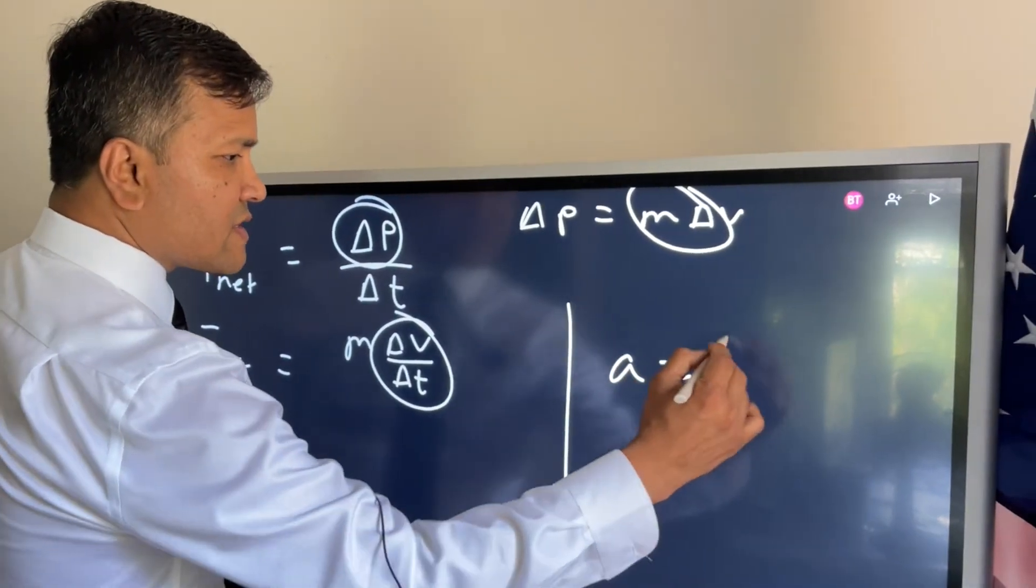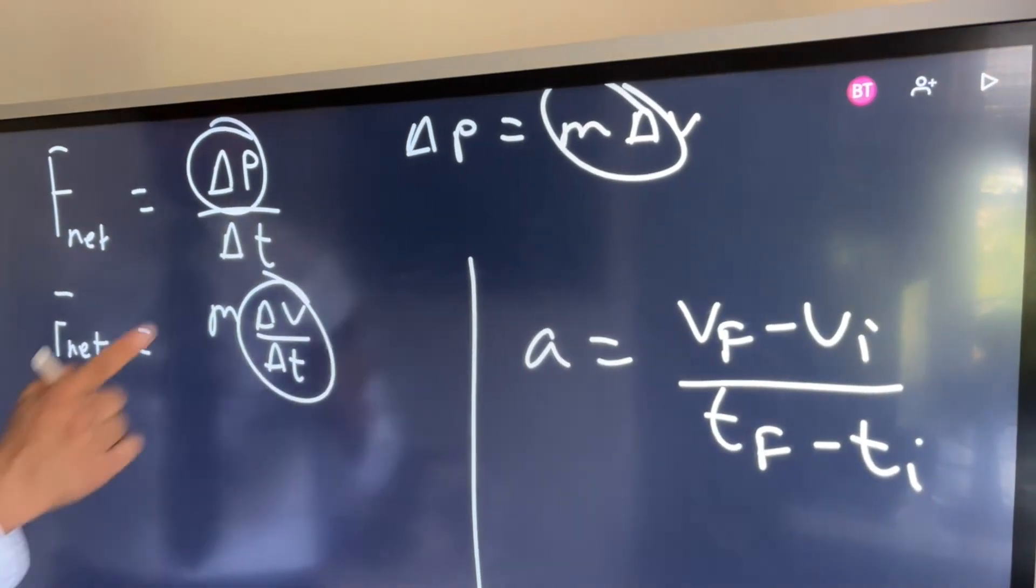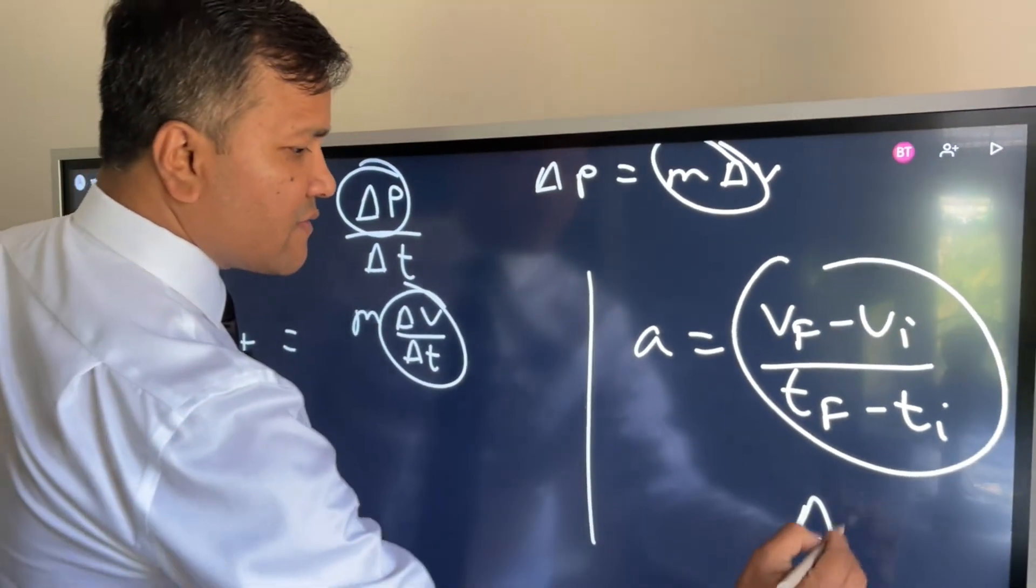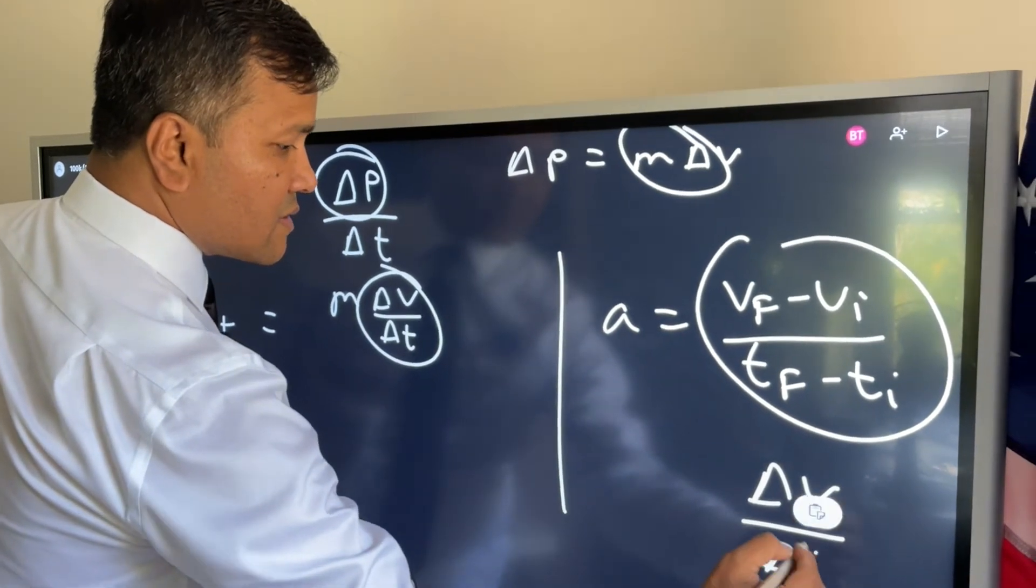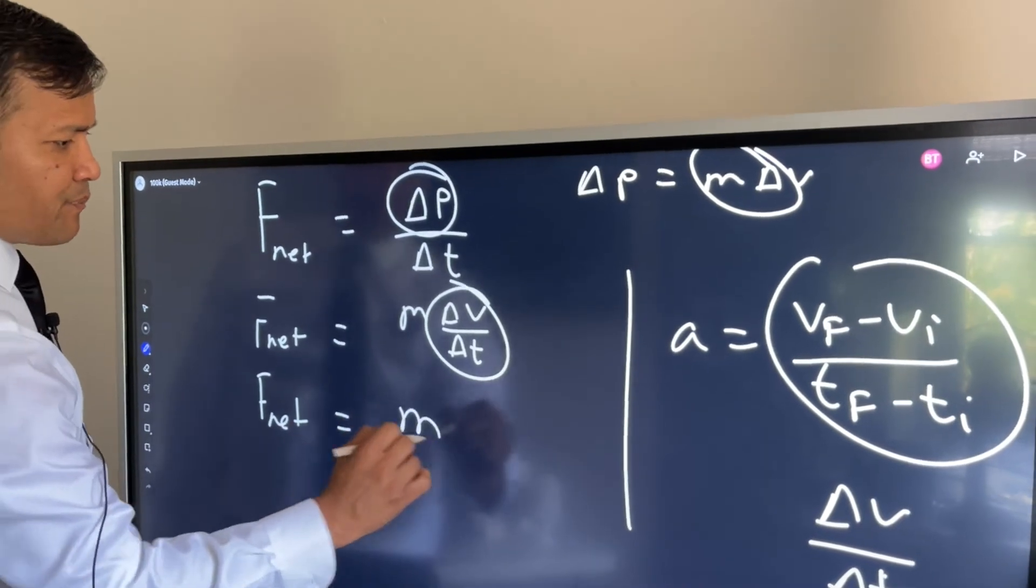Now from the flip classroom video you saw one thing: acceleration is (vf - vi)/(tf - ti). So this can be written as Δv/Δt. So let's replace this by m and this one a.